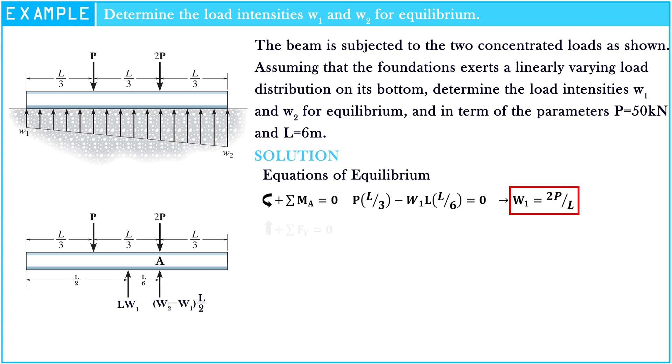The sigma of force along Y axis is equal to 0. So, 1/2 multiplied by W2 minus 2P over L multiplied by L plus 2P over L multiplied by L minus 3P is equal to 0. Hence, W2 is equal to 4P over L.